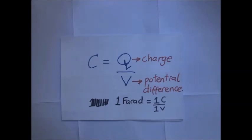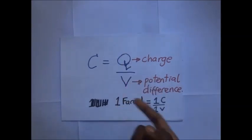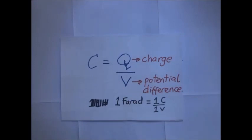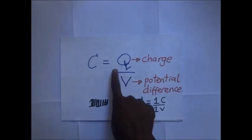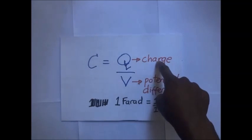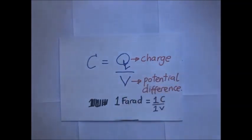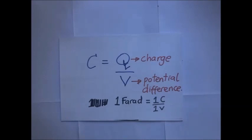By applying a voltage to a capacitor and measuring the charge on the plates, the ratio of the charge Q to the voltage — the potential difference — gives the capacitance value. Capacitance is equal to Q, the charge on either plate, divided by the potential difference across the plates. The property of a capacitor to store a charge on its plates in the form of an electrostatic field is called the capacitance of a capacitor.